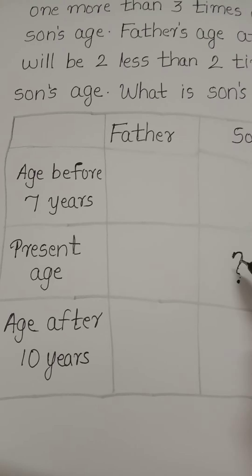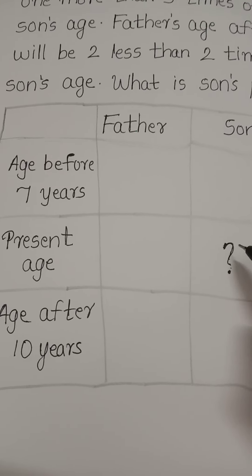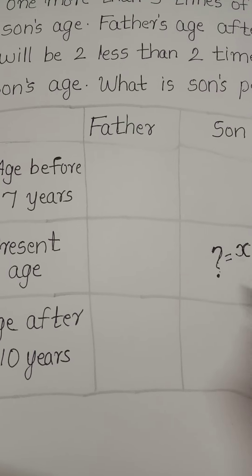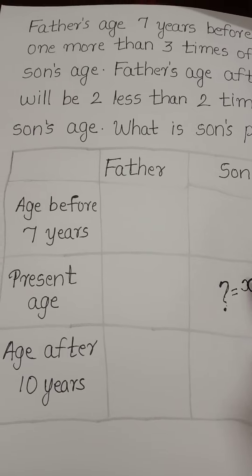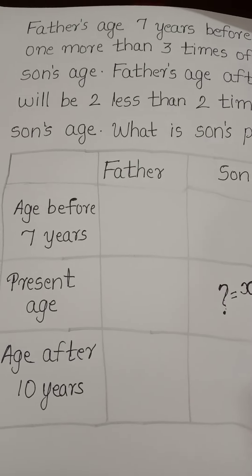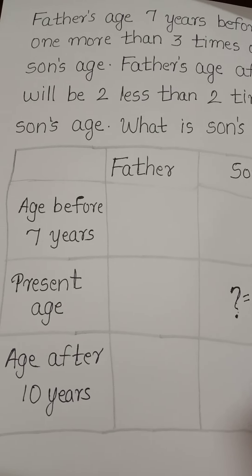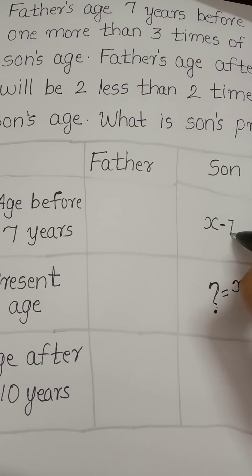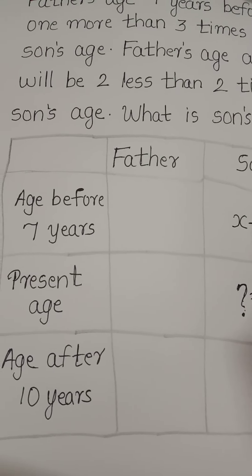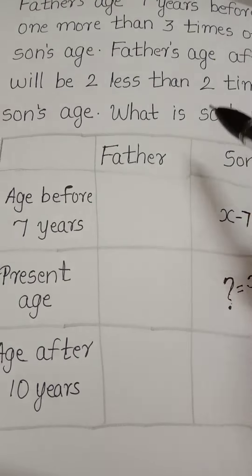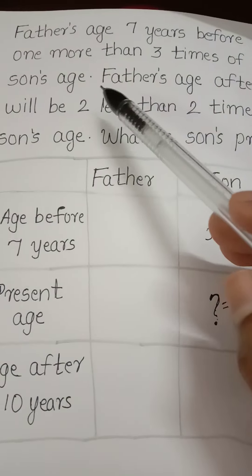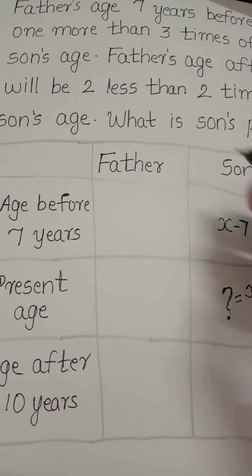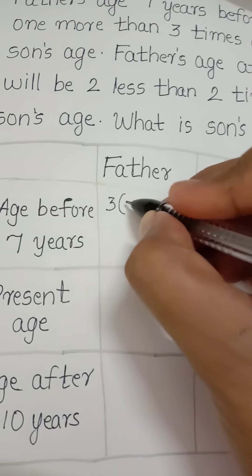We will put this as part of the method. Let the son's present age be x. We write a statement with the subject. Father's age 7 years before: x minus 7.